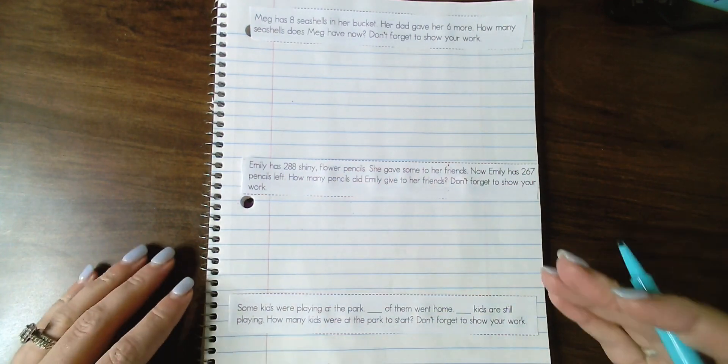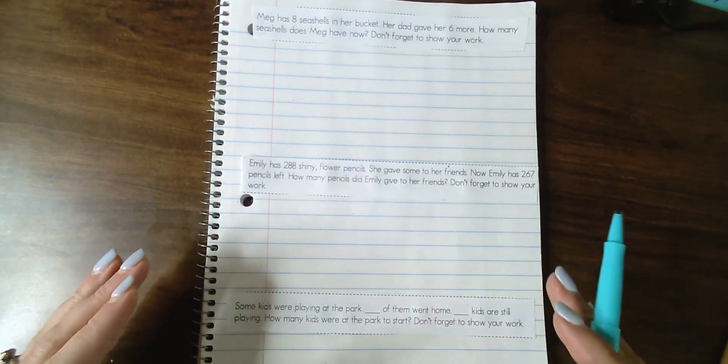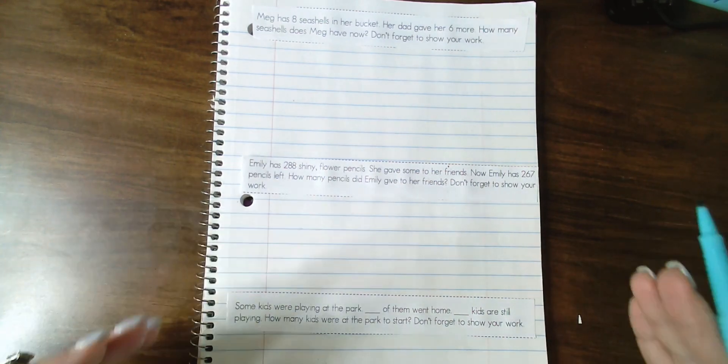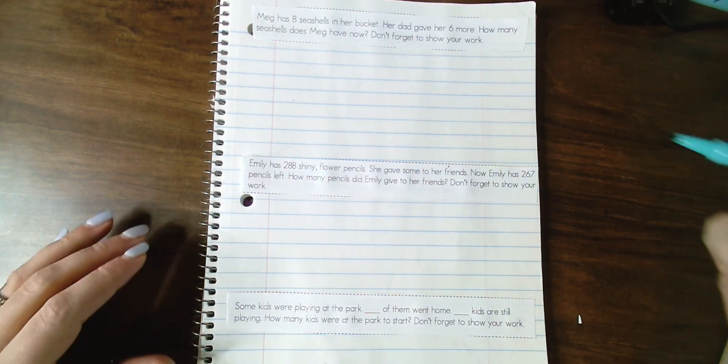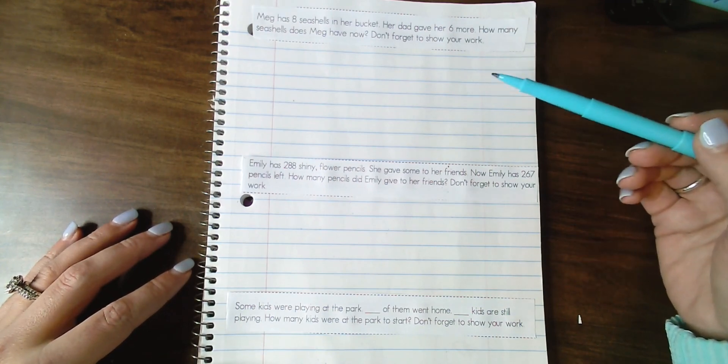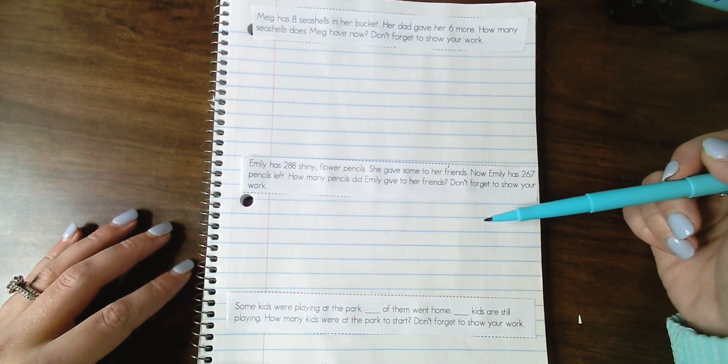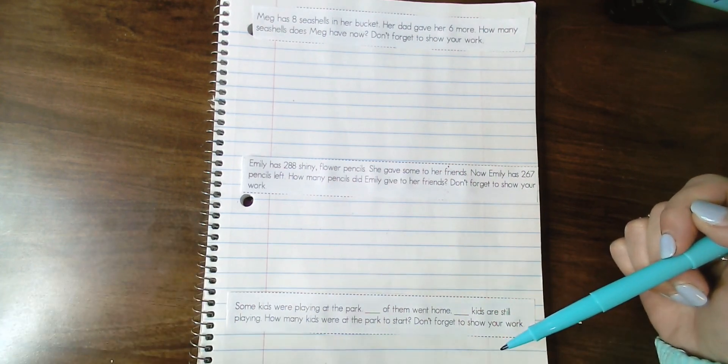So today I want to talk about how this strategy is going to work, and I'm going to model the start, change, result strategy using my daily word problem practice. We're going to start with reading the word problem out loud together. Then in our journal, we are going to write start, change, result. We don't know if we're adding or subtracting yet, so I'm just going to start out with those three words. I'm going to show you three different examples. The first one is going to be a basic problem. Then we're going to get into one with a little bit more challenging numbers. And then the final example I'm going to show you is going to be using a numberless word problem.